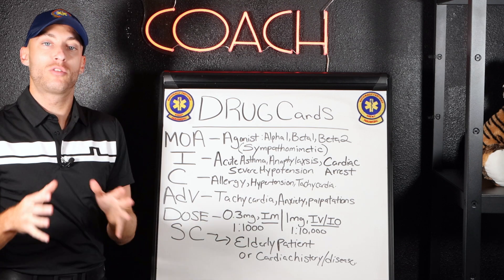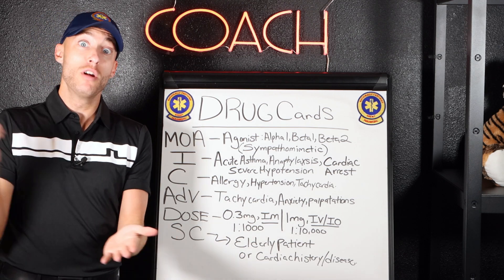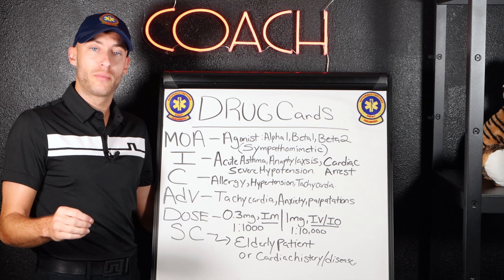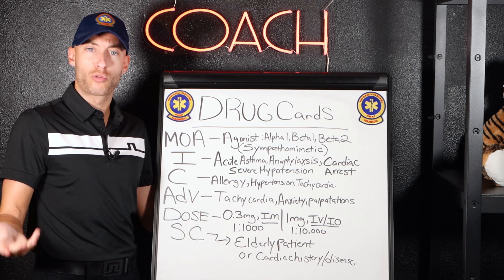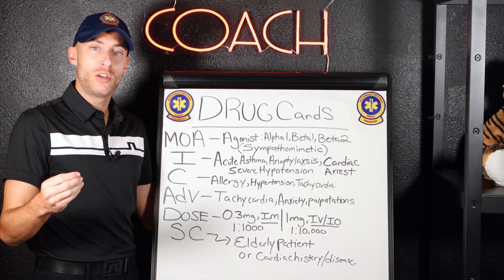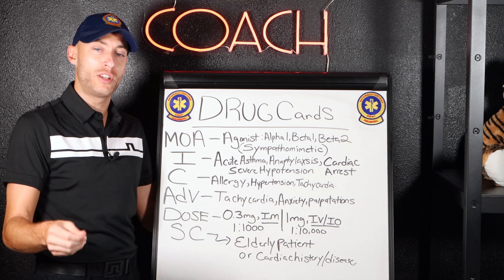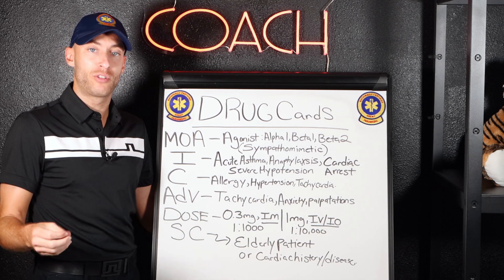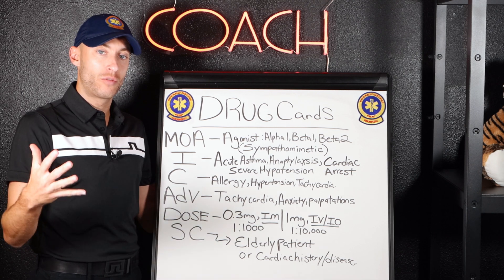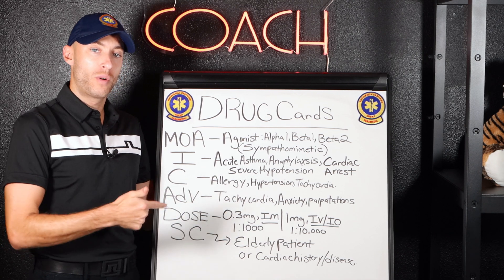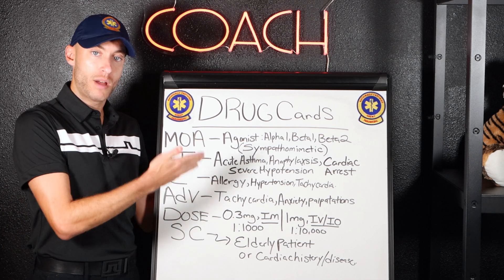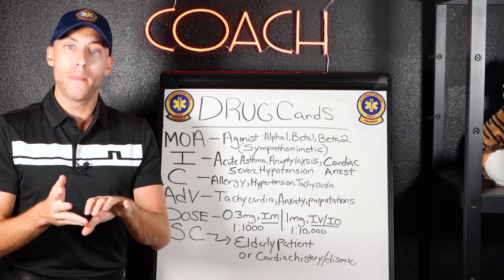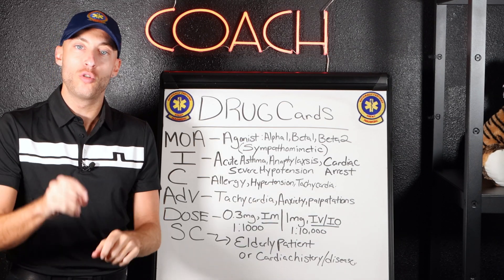When your instructor teaches you in class, it really sticks even more. In most EMS systems there are usually about 40 or so drugs you have to know on your protocol sheet to be a paramedic, and in national standards you've got to know these sets of drugs. In this video, I'm going to break down epinephrine. Epi is an alpha-1, beta-1, and beta-2 agonist.